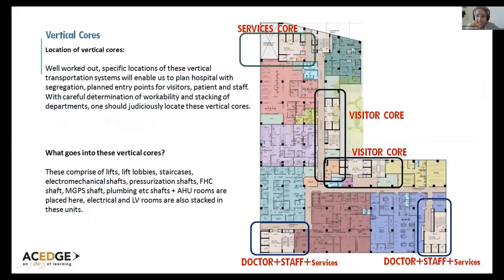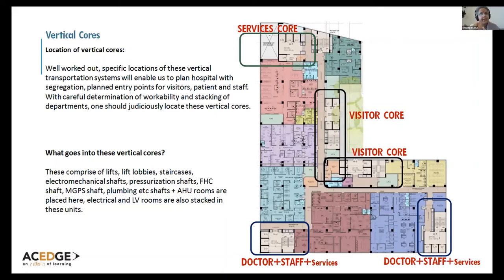Regarding the location of vertical cores — if you see the picture on the right, I am trying to show you where the entry points are. This was our entrance — there's a colonnade so people can walk under the rain, but it is a frontage. It is important to place visitor cores closer to the main entrance. Patients, visitors, and families will come from there and need to access these elevators quickly, rather than going into the depths of the hospital to access elevators.